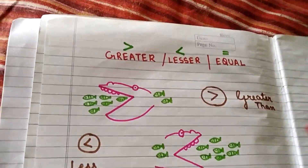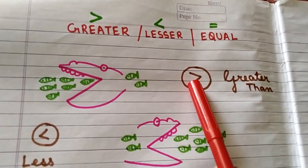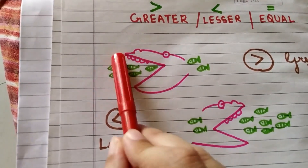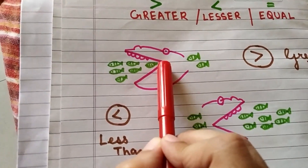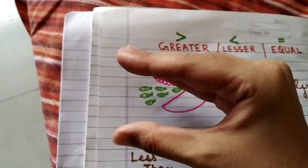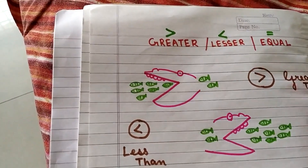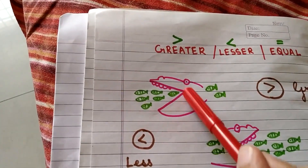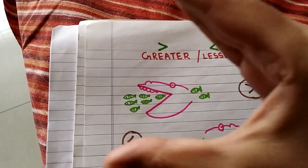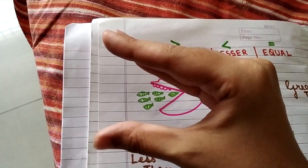The first sign is greater than. Look at the sign children, it is like this. Look at this crocodile — this crocodile wants to have more number of fishes. So his mouth will be open on that side where there is more number of fishes, whereas he will not like to have only two fishes; rather he will go for these many fishes. Remember: the mouth is open on the side where there is more number of fishes.